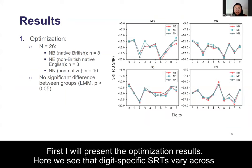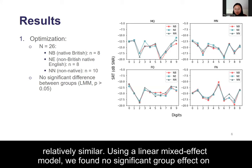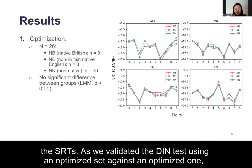First, I will present the optimization results. Here, we see that digit-specific SRTs vary across voices and recording conditions. However, across participant groups, these SRTs appear to be relatively similar. Using a linear mixed-effect model, we found no significant group effect on the SRTs.